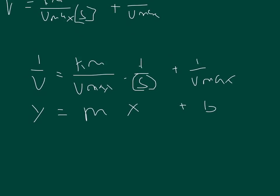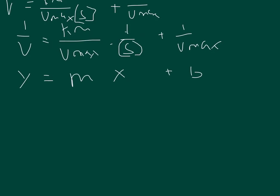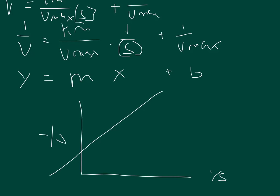If we graph all of that out, we have 1 over the velocity on the Y-axis and 1 over the substrate concentration on the X-axis, and we get a straight line. The Y-intercept, where X equals 0, is equal to 1 over Vmax. So you can easily calculate Vmax by finding the Y-intercept and taking the reciprocal of it.